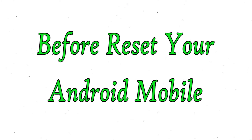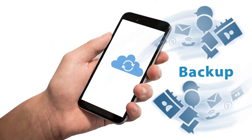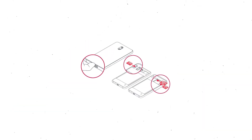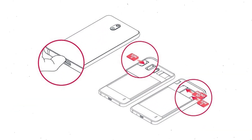Before resetting your mobile, charge your mobile if the battery is less than 50%. You need to make sure that the data on your device is backed up so you do not lose valuable photos or documents. Reset deletes all your mobile data, so you better backup all important data and remove SIMs and SD card.